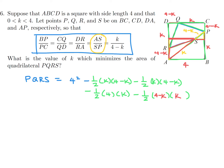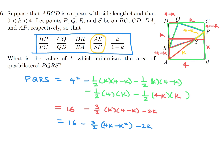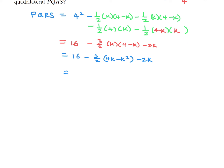The rest is straightforward algebra. The area of PQRS is 16 minus 3 over 2 times K times 4 minus K, minus 2K. Expanding gives 16 minus 3 over 2 times (4K minus K squared) minus 2K, which simplifies to 16 minus 8K plus 3 over 2 K squared.